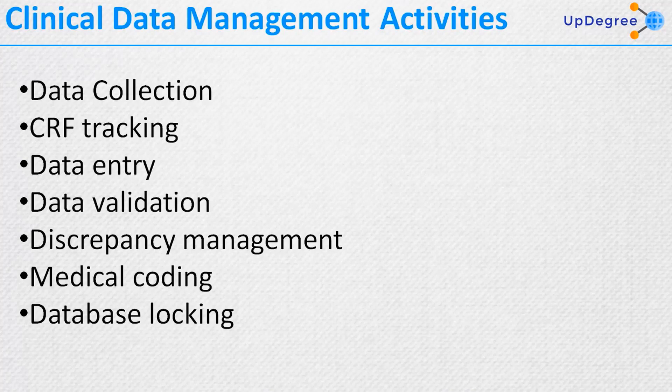Data validation is the process of testing the validity of data in accordance with the protocol specifications. Edit check programs are written to identify discrepancies in the entered data and are embedded in the database to ensure data validity. These programs are written according to the logic conditions in the DVP. Discrepancy is defined as a data point that fails to pass a validation check, and may be due to inconsistent data, missing data, range checks, or deviations from the protocol.